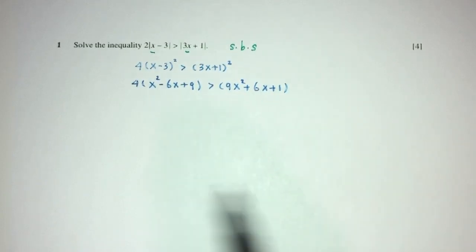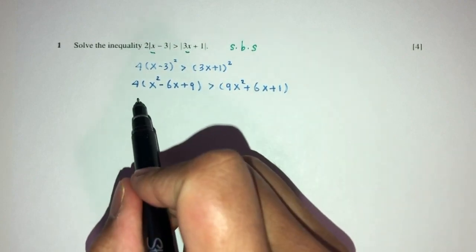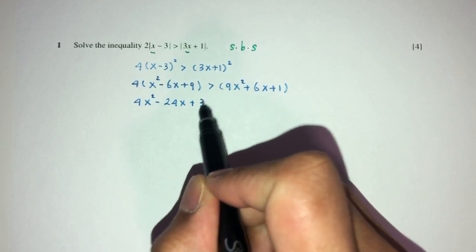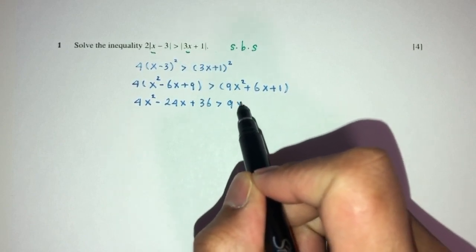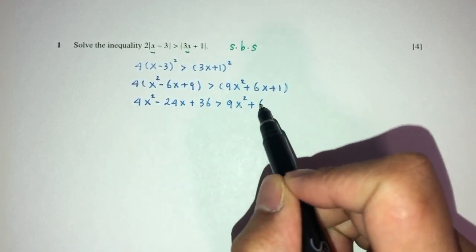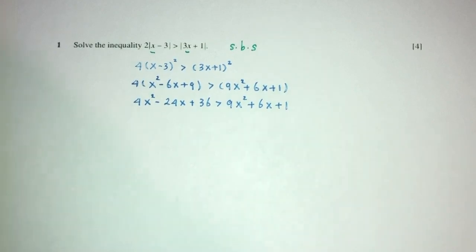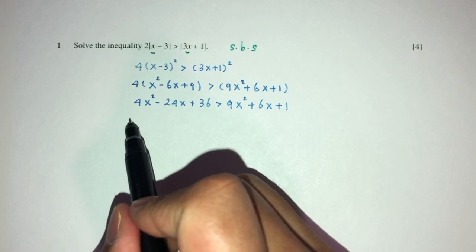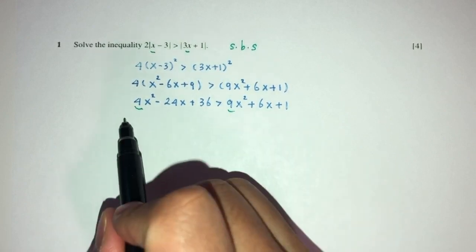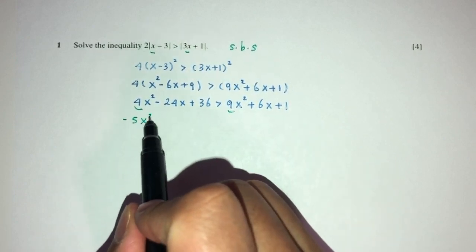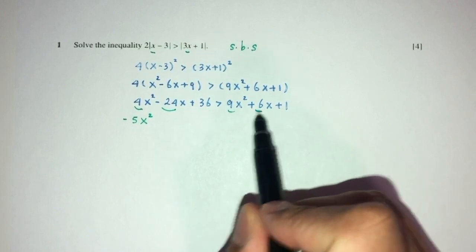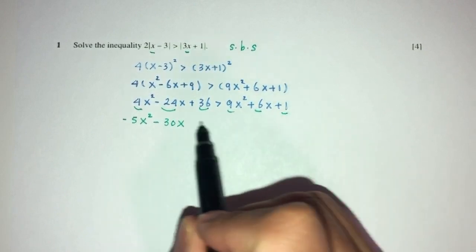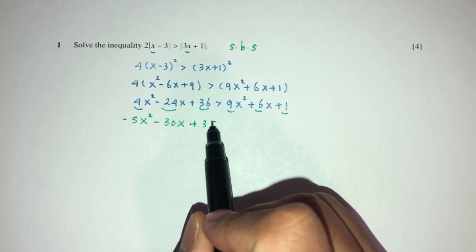Now expand this bracket to make things easier. That gives 4x squared minus 24x plus 36, greater than 9x squared plus 6x plus 1. Sending everything to one side: 4 minus 9 gives minus 5x squared, minus 24x minus 6x gives minus 30x, and 36 minus 1 gives plus 35, all greater than zero.